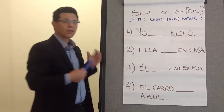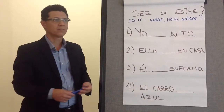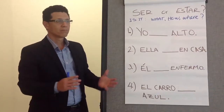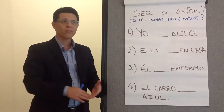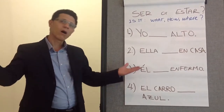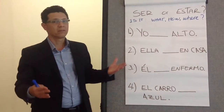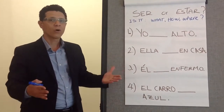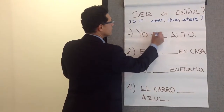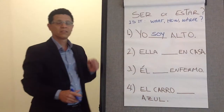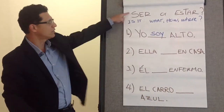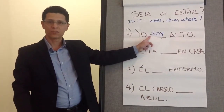The first example we have here is 'yo __ alto', which means 'I am tall'. Start thinking: is it what you are like — are you a tall person? Is it how you feel — you feel tall? Or is it where you are — you're in tall land? It's what you are like. So: Yo soy alto. You have to use ser; the first person of ser is soy.